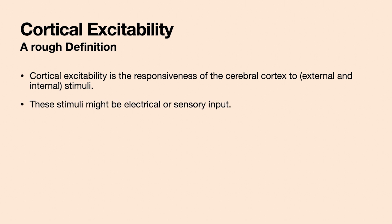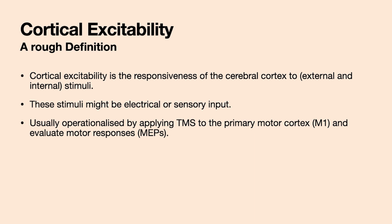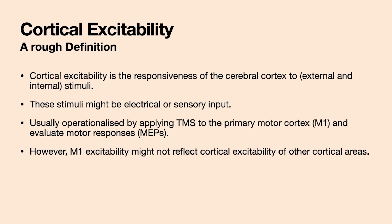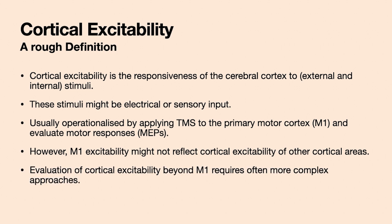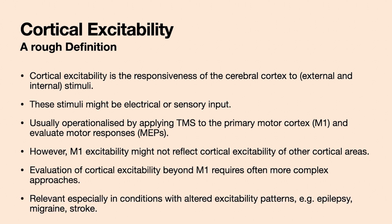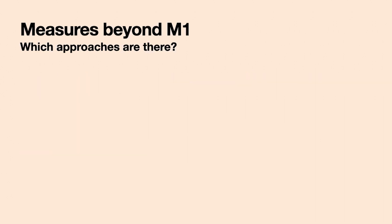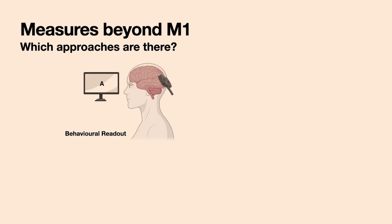The stimuli might be electrical or sensory input, and we usually operationalize them by applying TMS to the primary motor cortex and evaluating the motor responses. However, M1 excitability might not reflect cortical excitability in other cortical areas. Evaluation of cortical excitability beyond M1 requires often more complex approaches, and this is important in conditions such as epilepsy, migraine, or stroke, where patients have altered excitability patterns.